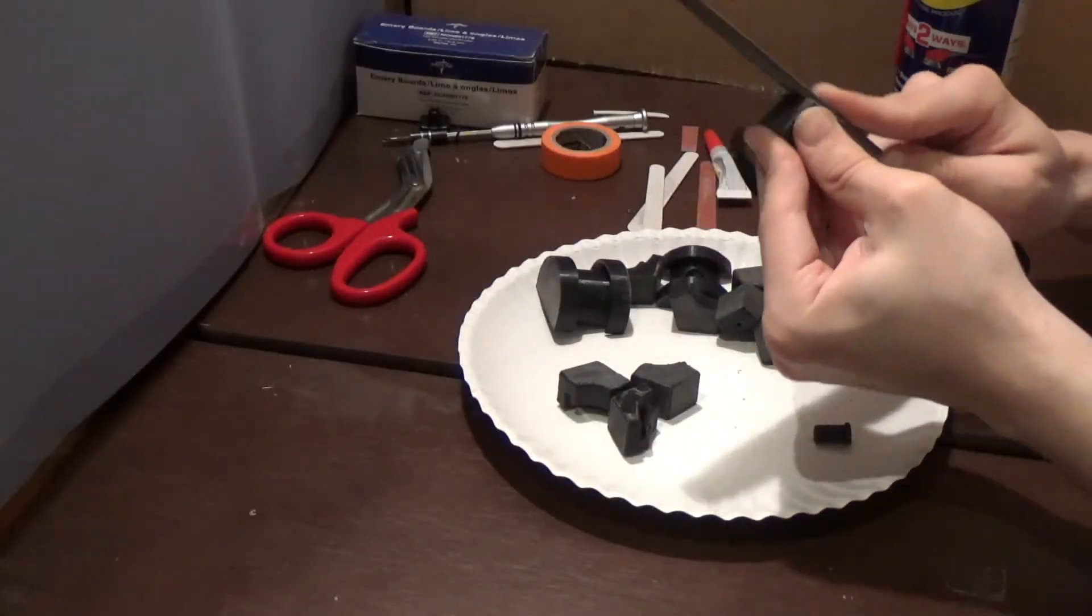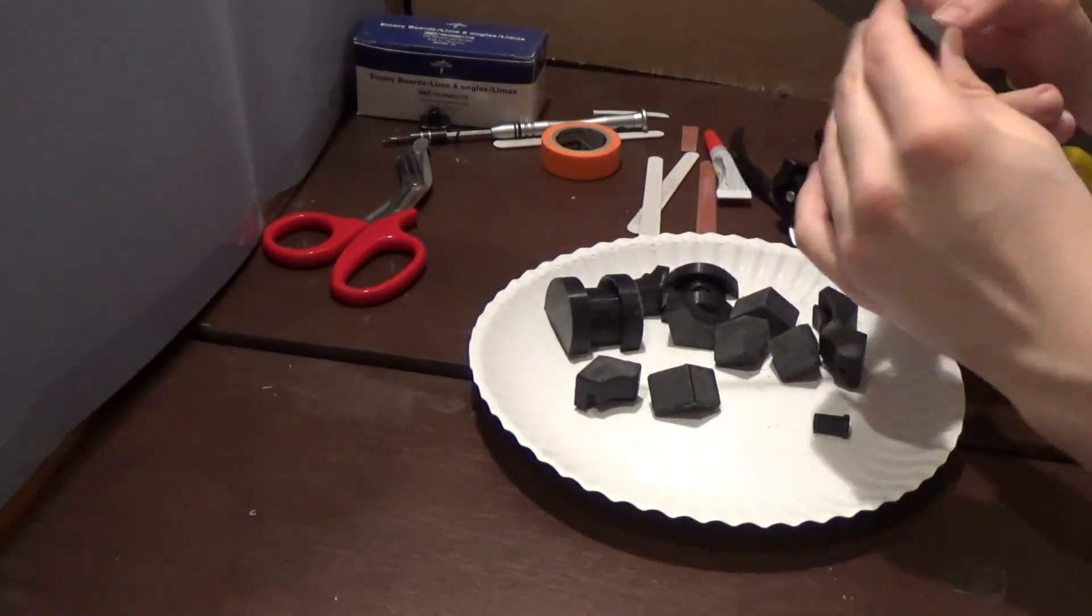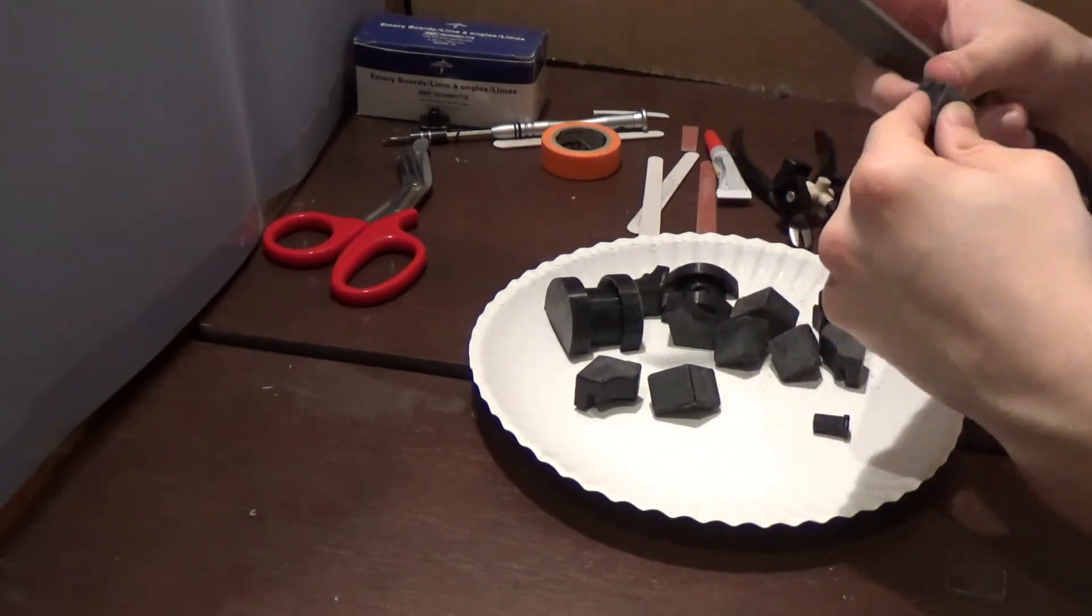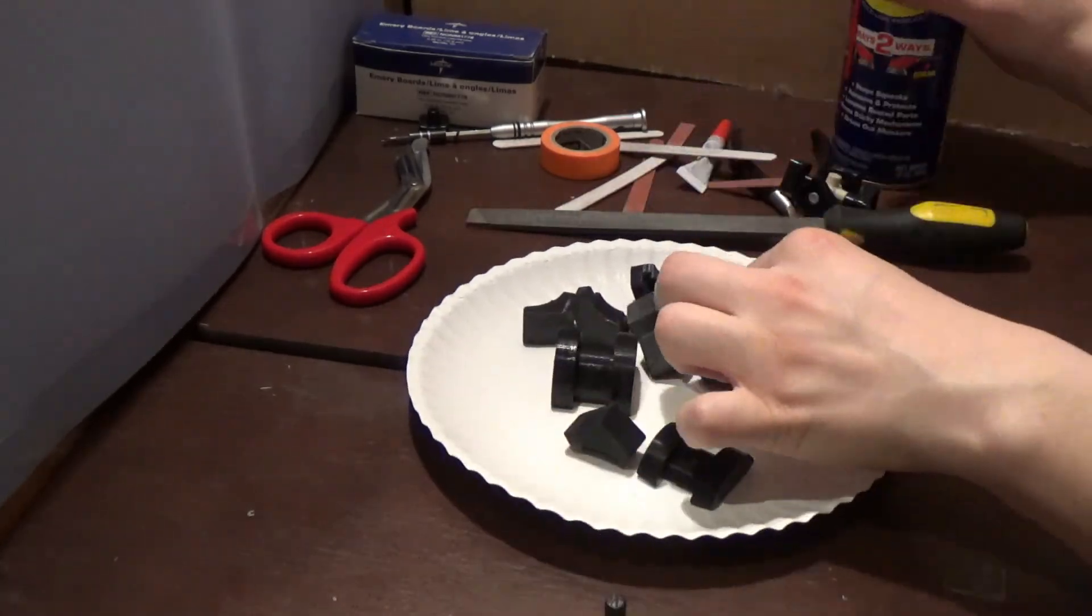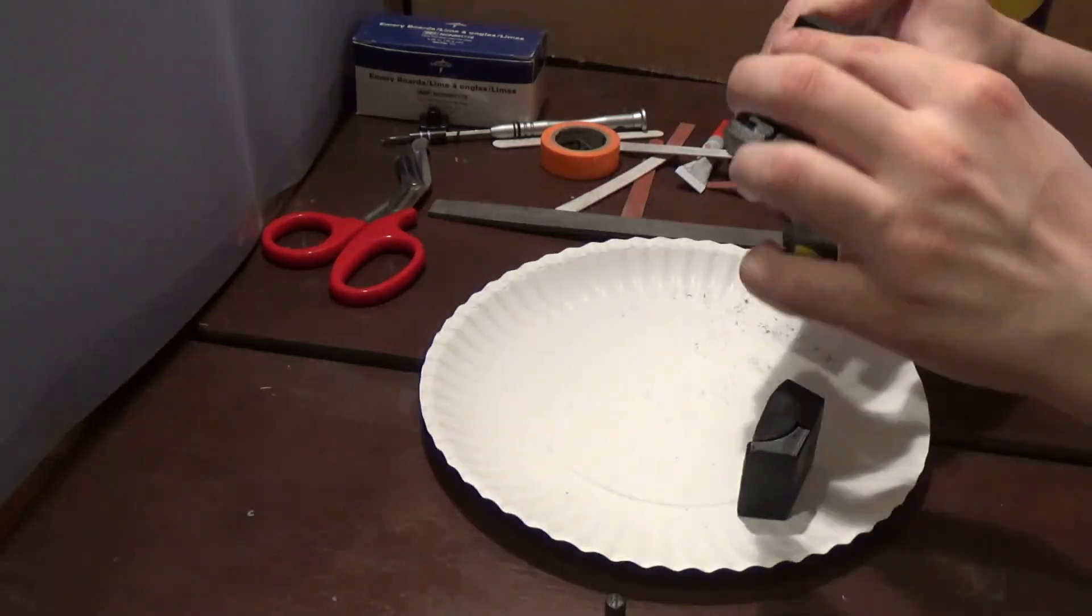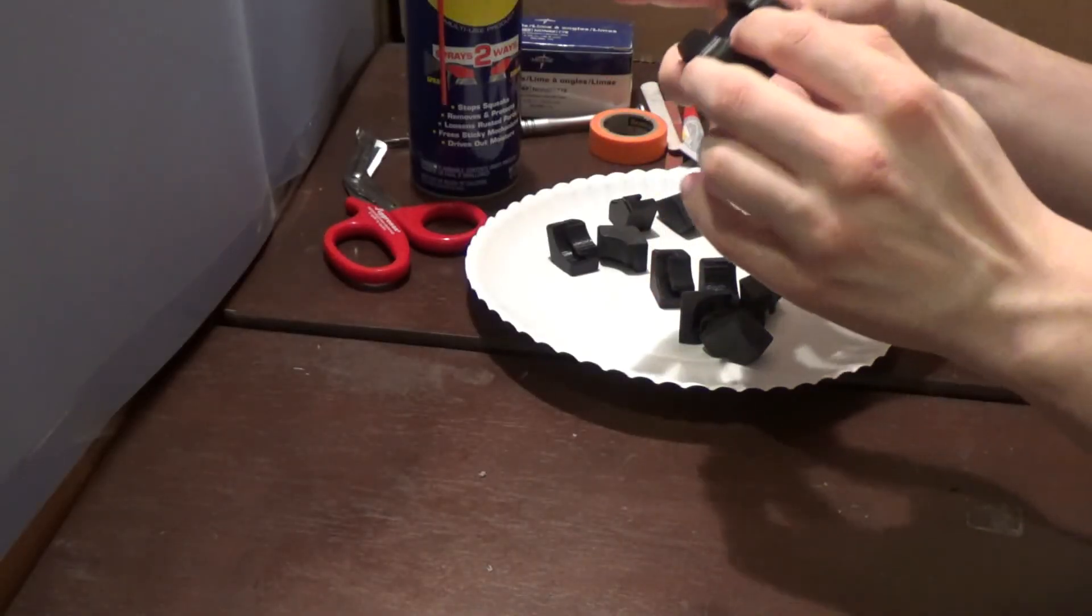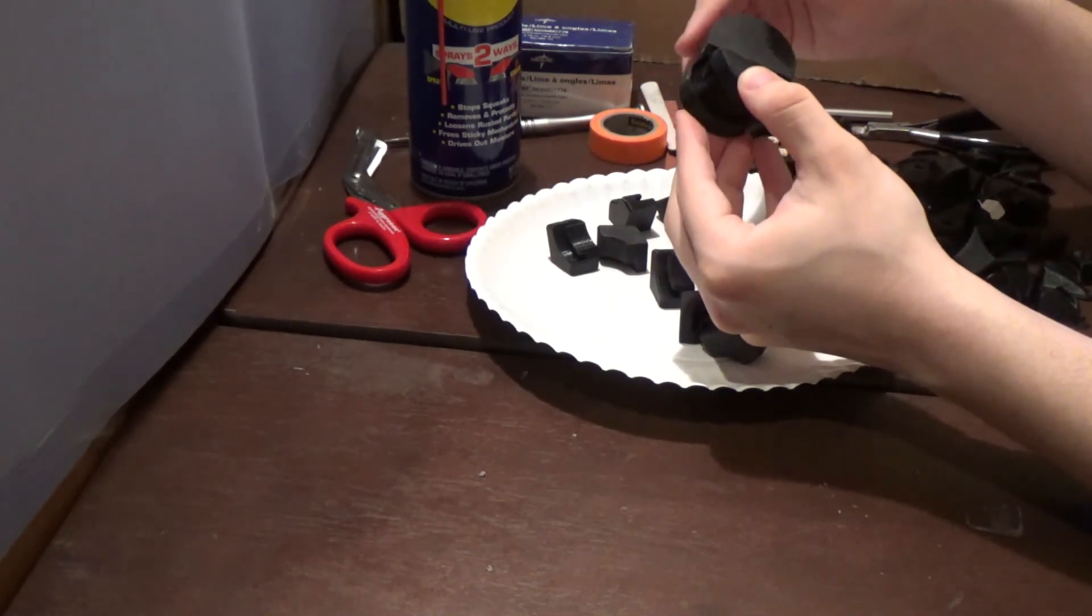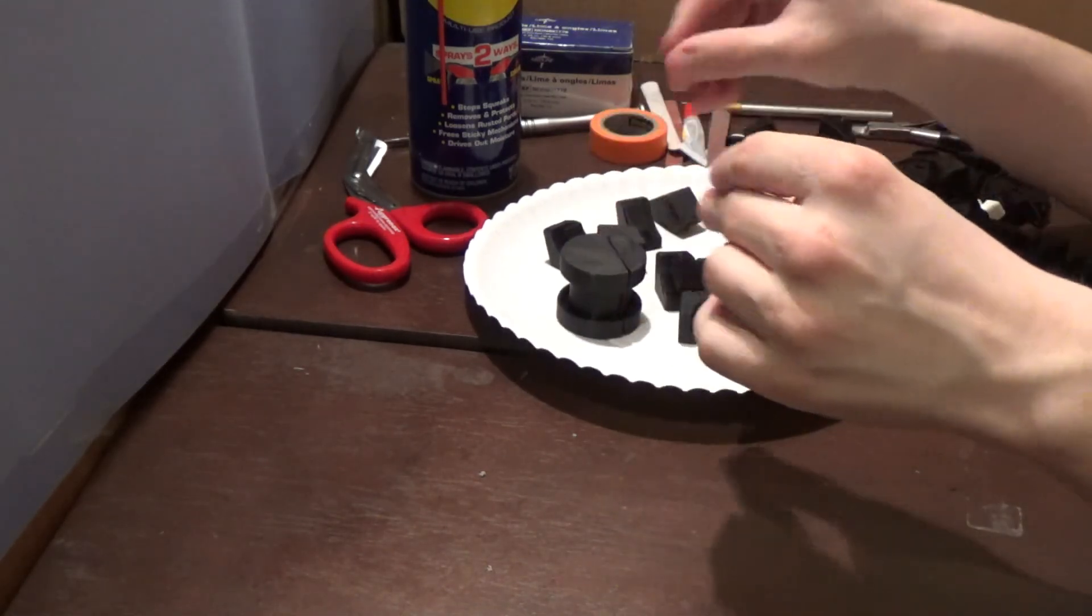I then sanded all of the faces that were going to be stickered, as well as the internal faces of the corners. I then used a file to smoothen out the rough surfaces. I covered the pieces in WD-40 to darken them, and then semi-assembled the puzzle to make sure that the corners didn't need any extra sanding. After smoothening the pin and the circular hole in the large center pieces, I made sure that the puzzle turned properly, and then it was ready for final assembly.